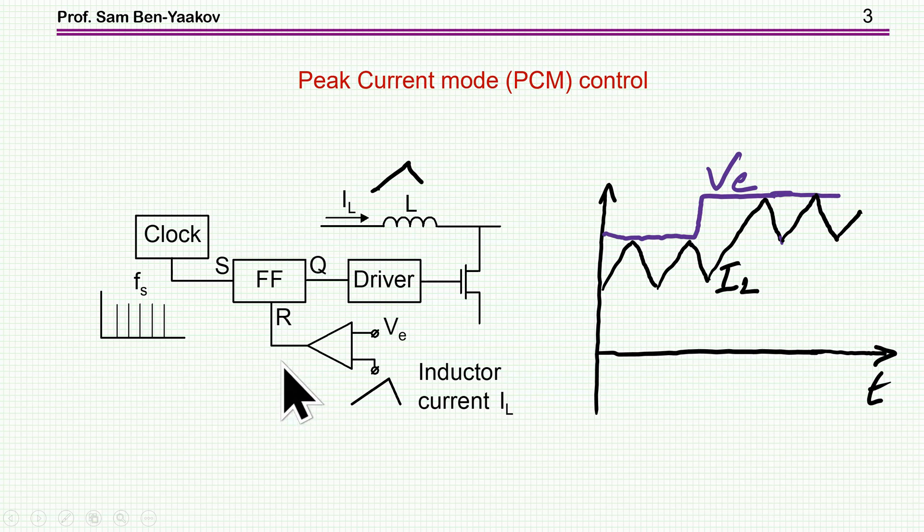In this case, we have a clock of fixed frequency which is setting a flip-flop. Once the flip-flop is set, the transistor, the MOSFET, is turned on by the driver, and then the current goes up. When it reaches a certain value, the peak value equal to this V_E, the flip-flop is reset and the transistor, the MOSFET, is in the OFF state.